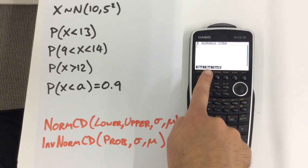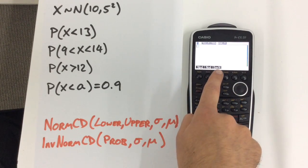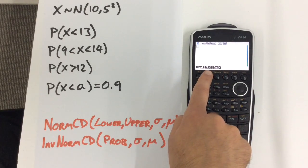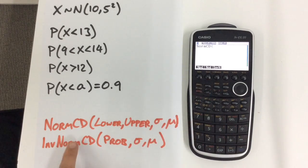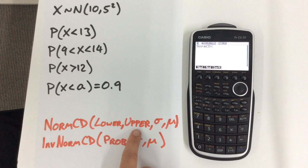Now we're only going to use NCD and InvN. NCD is for doing usual calculations with a normal distribution. Pressing that, we can see what we're going to need to put in: a lower bound, an upper bound, the standard deviation, and the mean value.